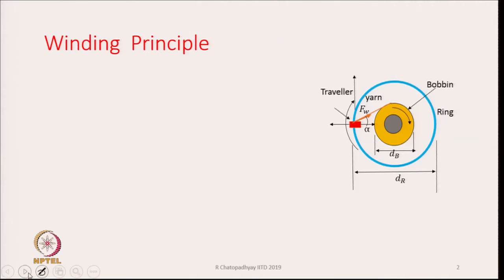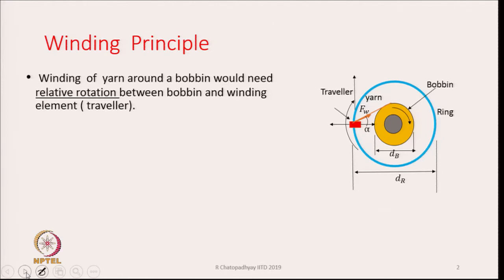As said earlier, winding and twisting are inseparable in ring spinning. Therefore, the elements used to twist the fibres also help in winding the yarn on the bobbin. In the diagram, the ring is shown by a blue circle, the bobbin is shown in yellow, and the spindle exists at the center. The traveler is shown in red in this diagram.